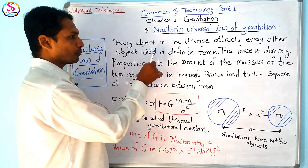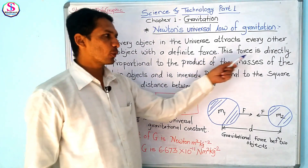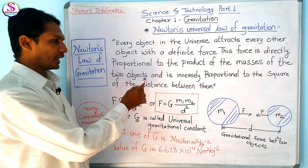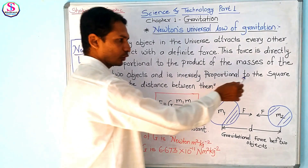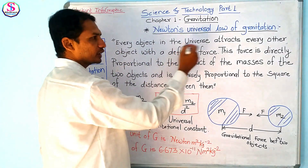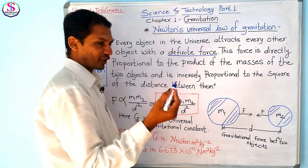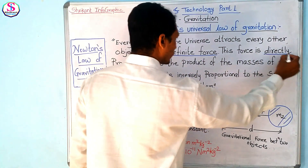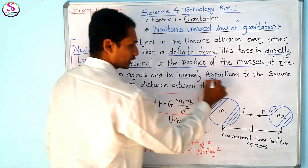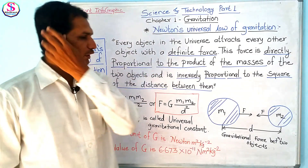Newton's law of gravitation states: every object in the universe attracts every other object with a definite force. This force is directly proportional to the product of the masses of the two objects, and is inversely proportional to the square of the distance between them. That attractive force is called gravitational force.